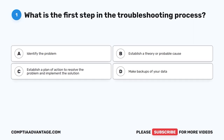Question 1. What is the first step in the troubleshooting process? A. Identify the problem. B. Establish a theory or probable cause. C. Establish a plan of action to resolve the problem and implement the solution. D. Make backups of your data.